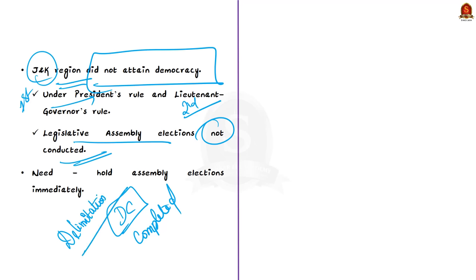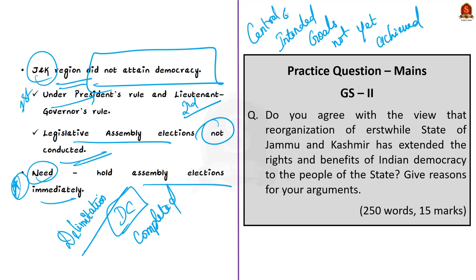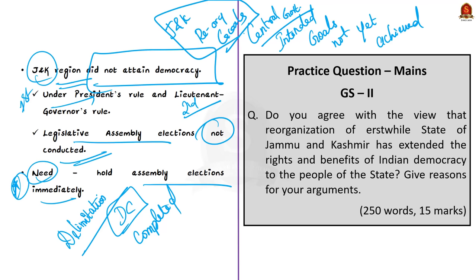The author contends that the promise of democracy seems far away, and to achieve this goal, assembly elections need to be held immediately. The conclusion is that the central government did not achieve the intended goals in the J&K region and it has a long way to go. In this news article, we saw the J&K Reorganization Act goals — the government quoted certain goals during reorganization, and the author discussed how far each goal has been achieved, substantiated with current data. For mains answers, you must support your points with statistics or government-oriented data.